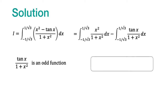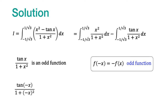Recall that an odd function is defined as a function which satisfies the property: f of minus x is equal to minus of f of x. We can verify this by replacing x with minus x. The expression we get is the negative of tan x divided by 1 plus x squared. This confirms that this function is an odd function, and therefore this integral would become zero.